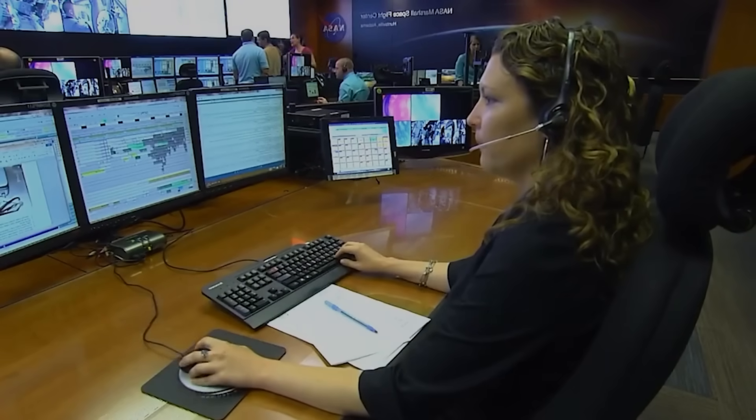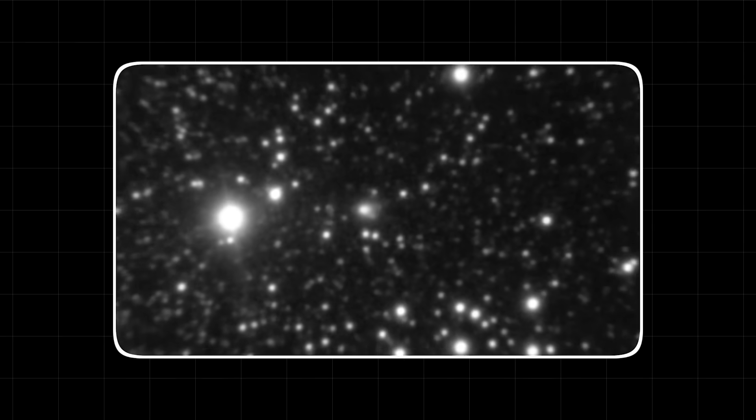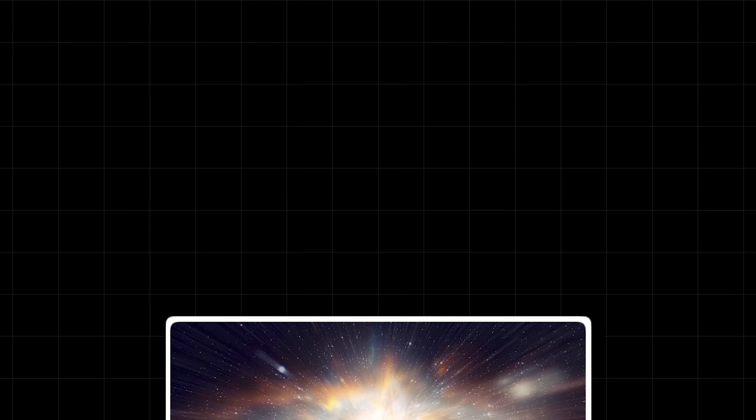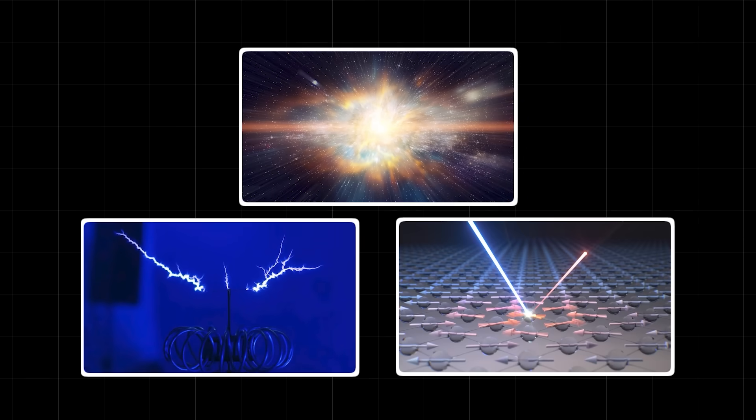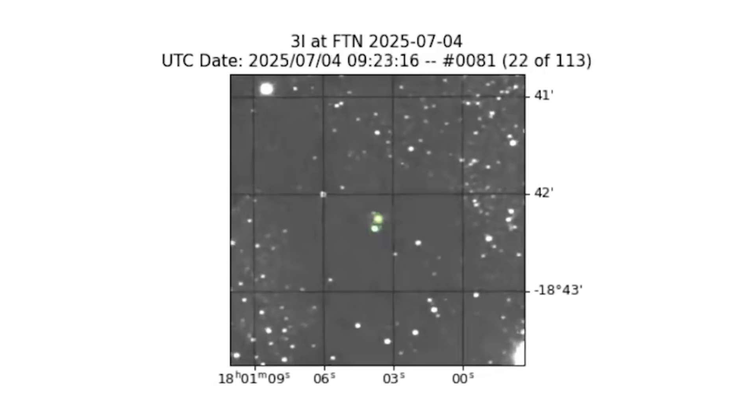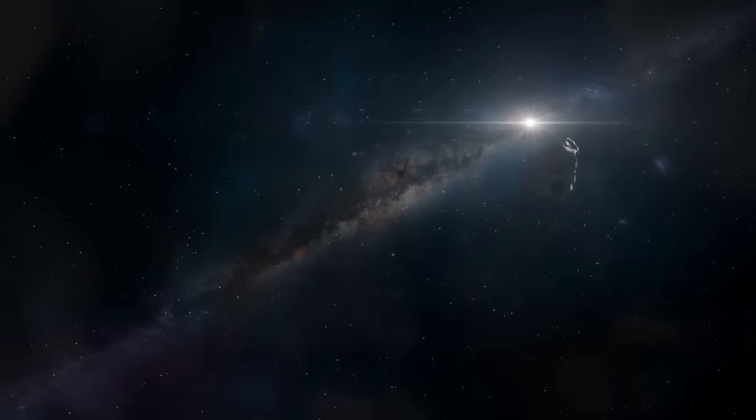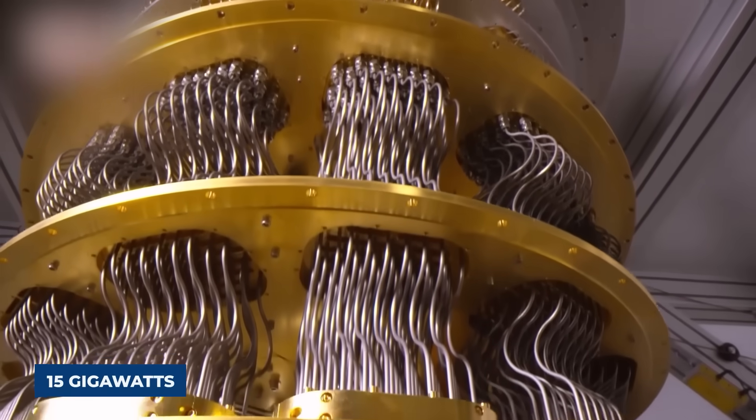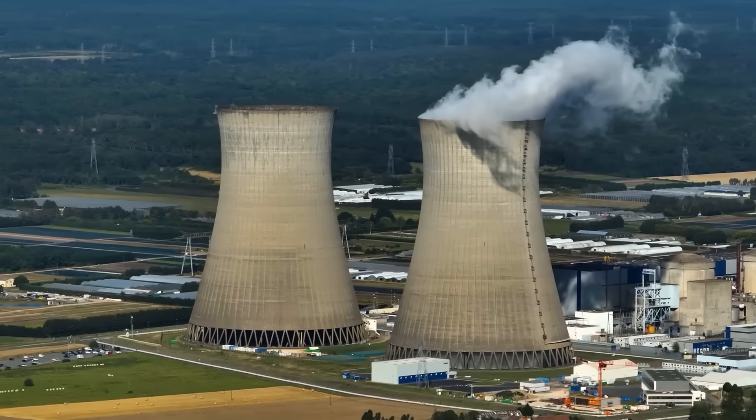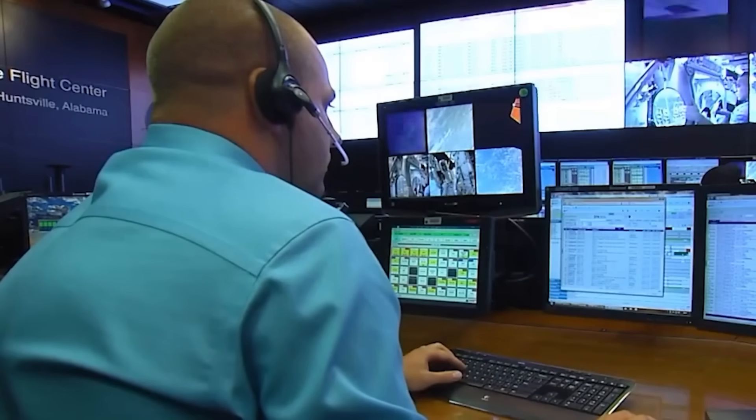The most chilling result of the simulation was the energy analysis. The object was far too bright for its size. The AI simulated every known natural phenomenon - cosmic ray impacts, electrostatic discharge, resonant scattering - and none of them explained the steady, unwavering glow. The only simulation that fit the data was one that included an active internal energy source. Prometheus calculated the output at roughly 15 gigawatts. That's the equivalent of 15 large nuclear power plants running non-stop.